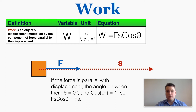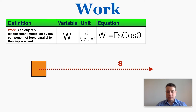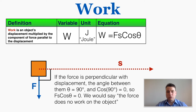If the force is perfectly perpendicular to the displacement, the cosine of 90 degrees is 0, so the whole work equation goes to 0. So if you have a force applied in a perfectly perpendicular direction to the displacement of the object, that force is not doing any work on the object as we understand work in physics.